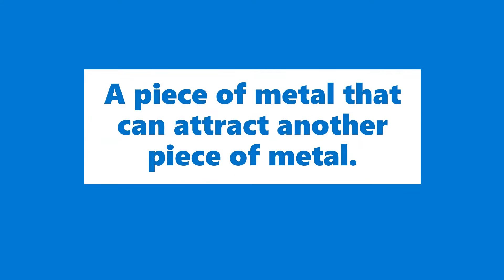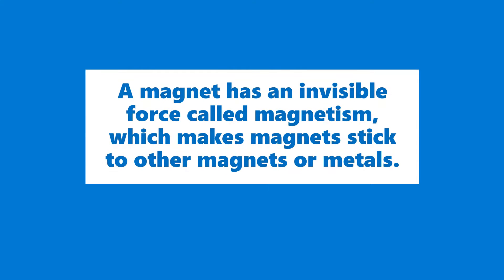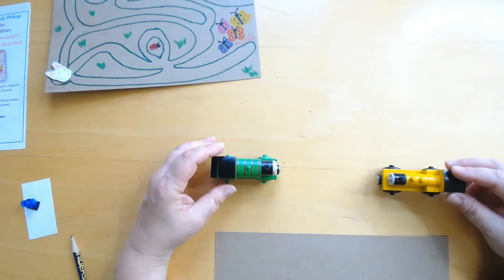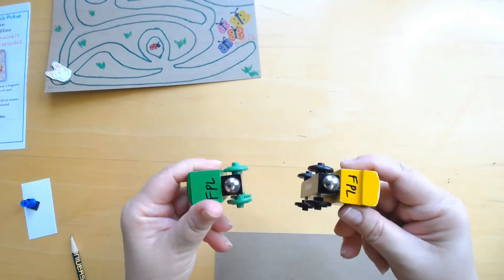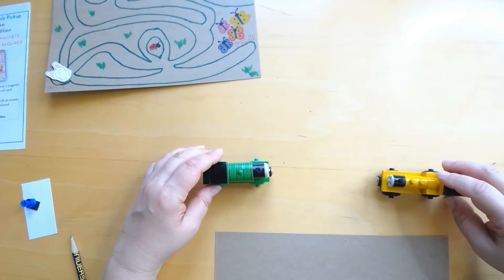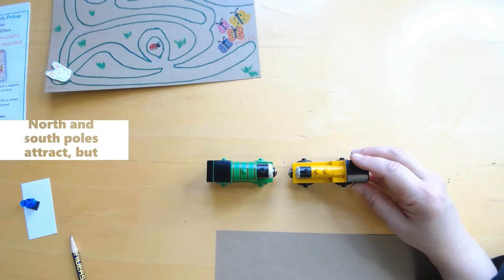What is a magnet? A piece of metal that can attract another piece of metal. A magnet has an invisible force called magnetism which makes magnets stick to other magnets or metals. Here's Duncan and Percy. They have magnets on the front and their back so that they can connect together, but watch this.